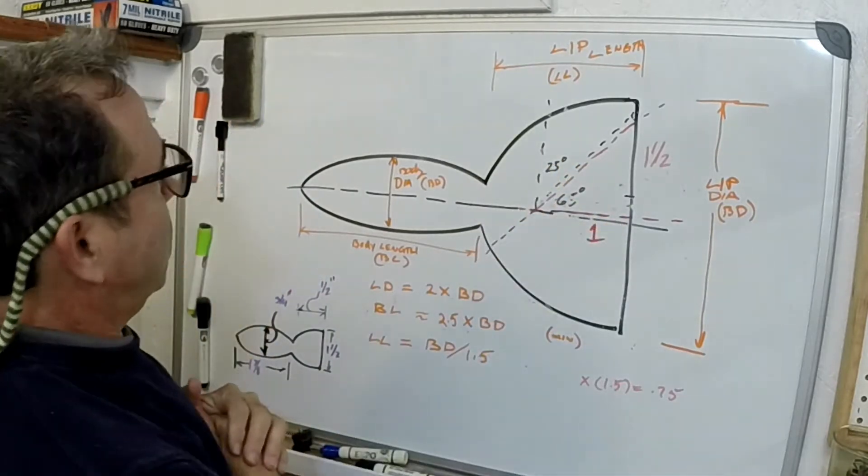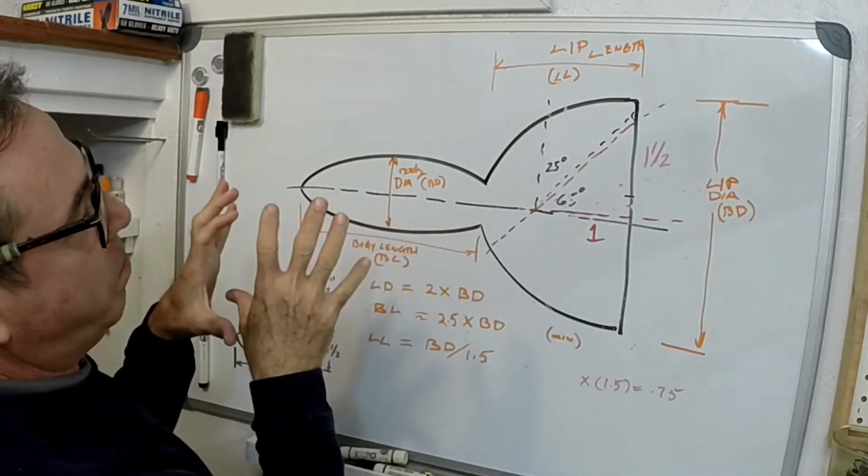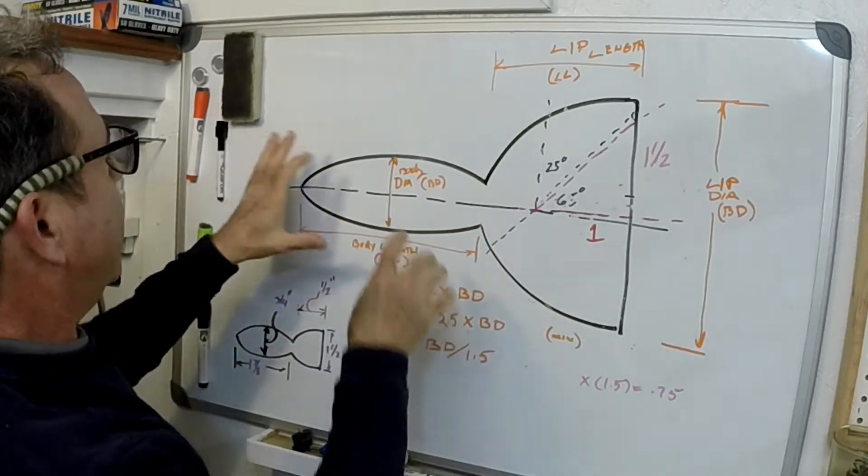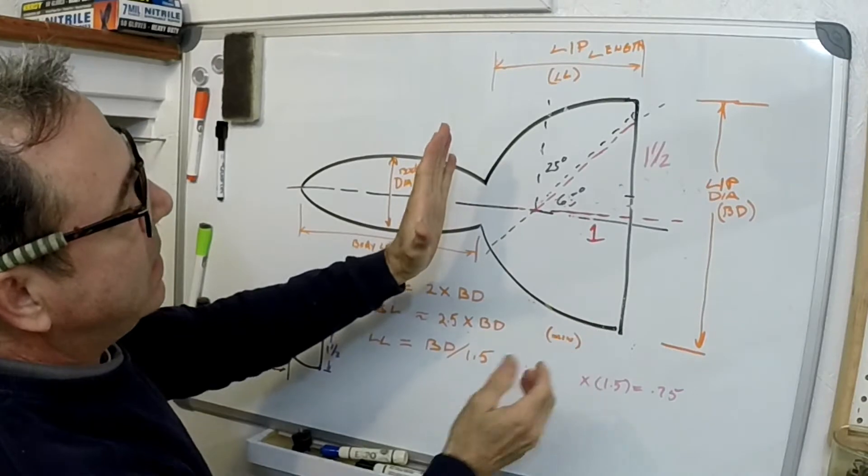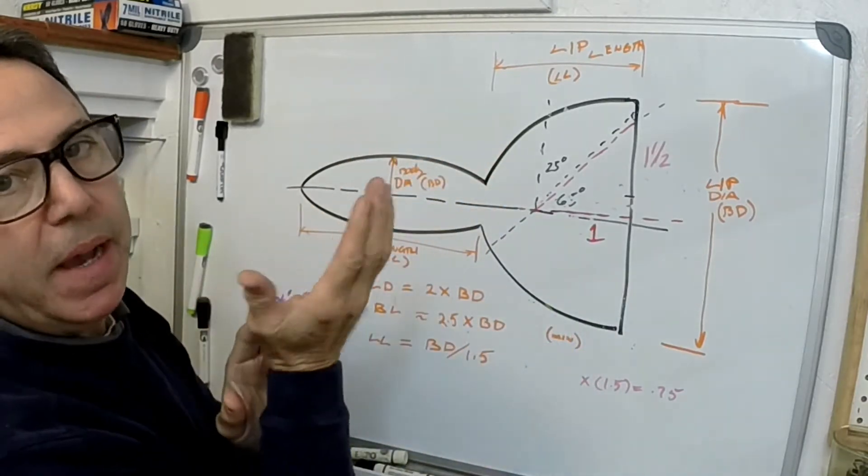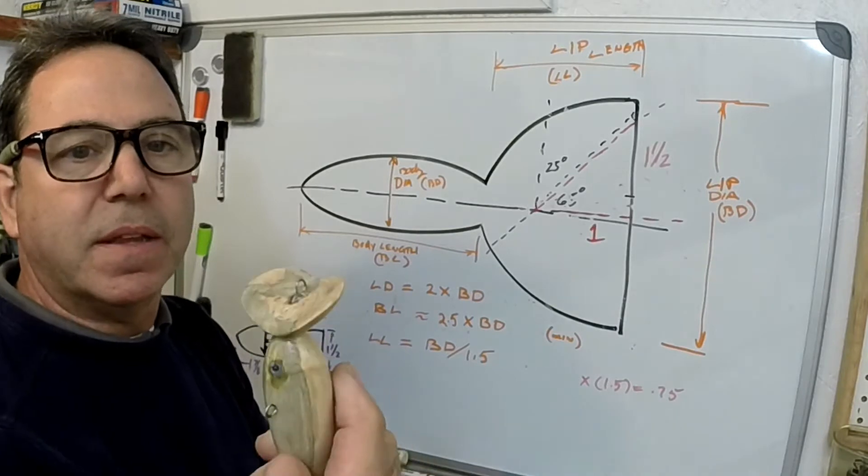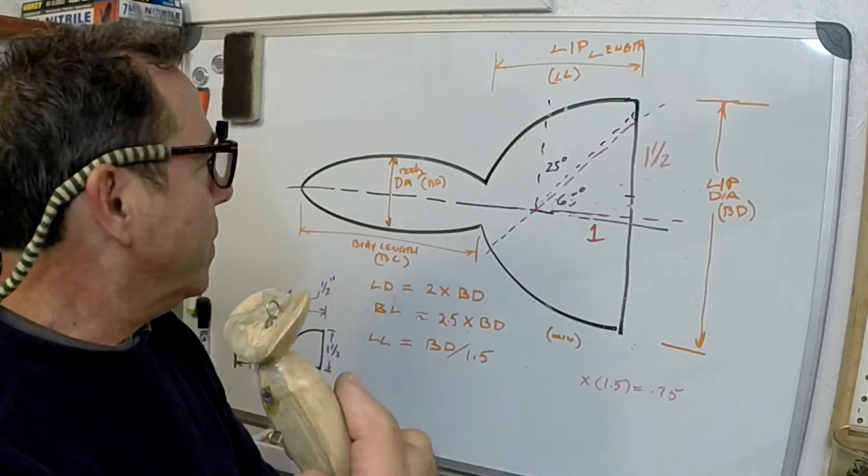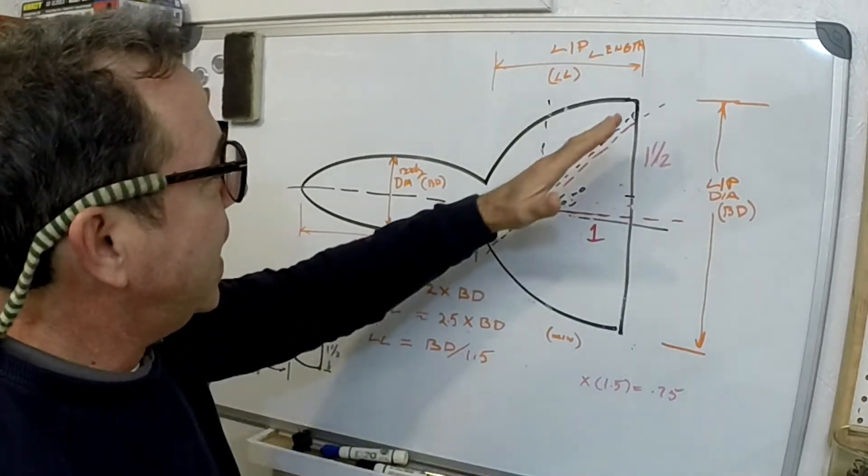This drawing is what you would expect to see after you've laid out the basic blank. This would be the body and this would be that circular lip section that you would end up having to carve out and shape into what ends up being this wobble lip. The key to making this wobble lip work is that angle.